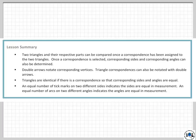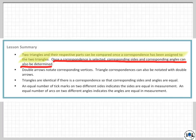All right, so here we go, we are in a lesson summary, and important points here are two triangles in their respective parts can be compared once a correspondence has been assigned to the two triangles. Once the correspondence is selected, corresponding sides and corresponding angles can also be determined. So once you decide which triangle you're talking about and which order you're talking about of the vertices, you can then start comparing them.